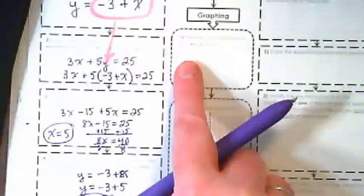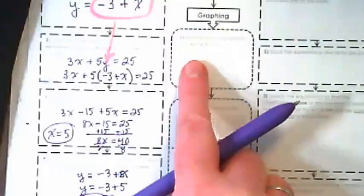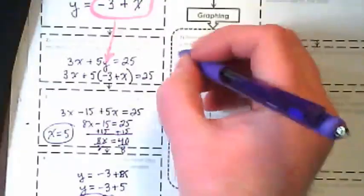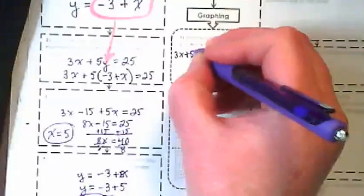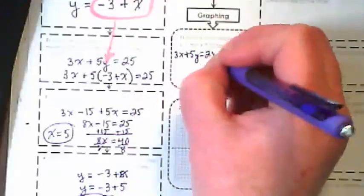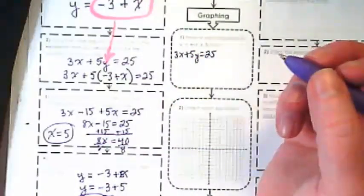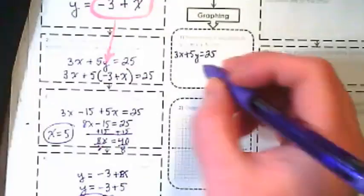For graphing, we're going to rewrite each equation in y equals mx plus b form. That first equation is 3x plus 5y equals 25. It is in standard form, so we need to convert it.